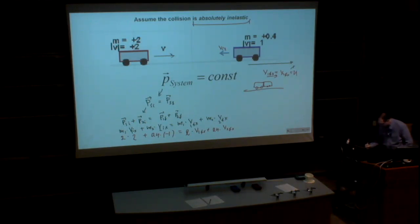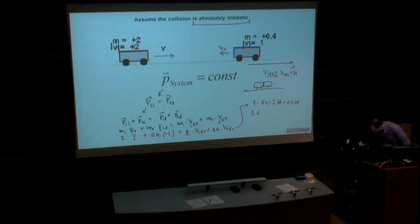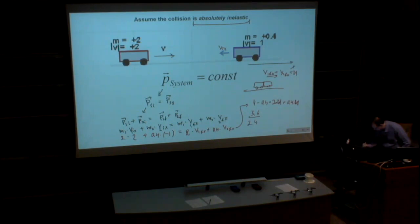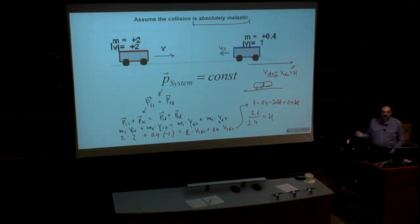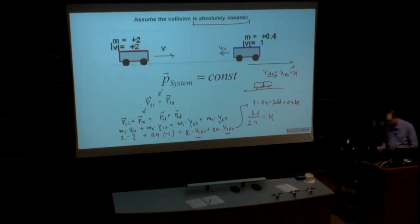Since they form one object and travel together after the collision, they have the same velocity — let's call it U. So 2×2 + 0.4×(−1) = (2 + 0.4)×U, giving 3.6 / 2.4 = U. That's the answer. This type of absolutely inelastic collision is the easiest case: when they form one object, they travel with the same velocity — only one unknown.